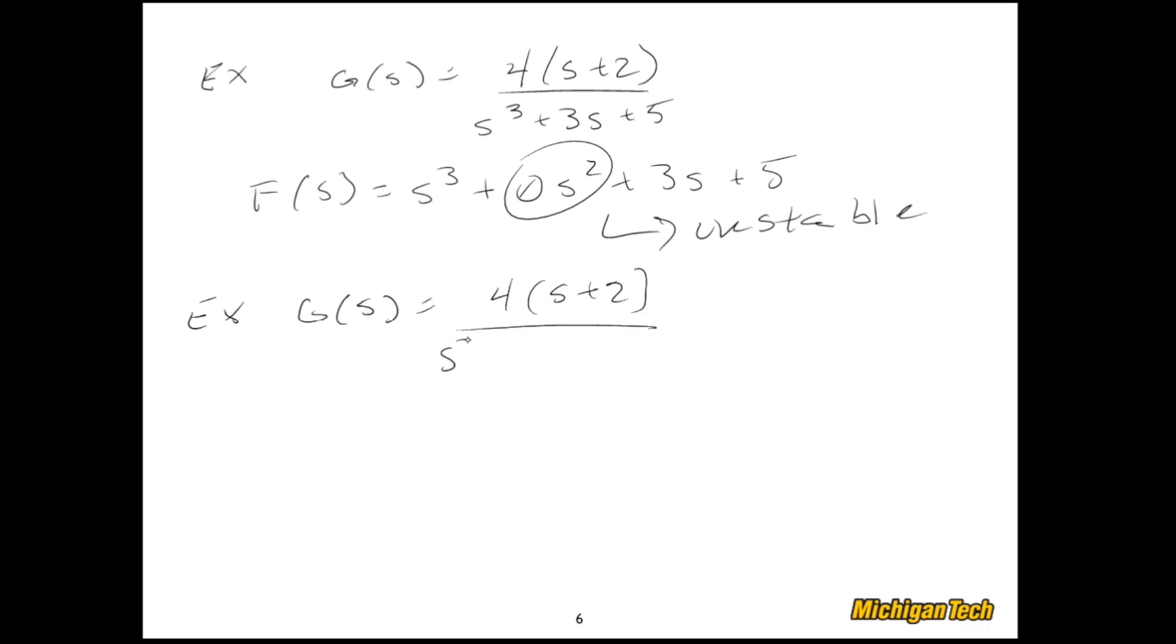So let's look at a couple examples. Let's say we had G of S is 4(S+2) over S cubed plus 3S plus 5. So our characteristic equation is S cubed plus 0S squared plus 3S plus 5. Because of that, we know that this system is unstable. And if you went ahead and checked the roots of these, you would find that they are not all in the left half plane.